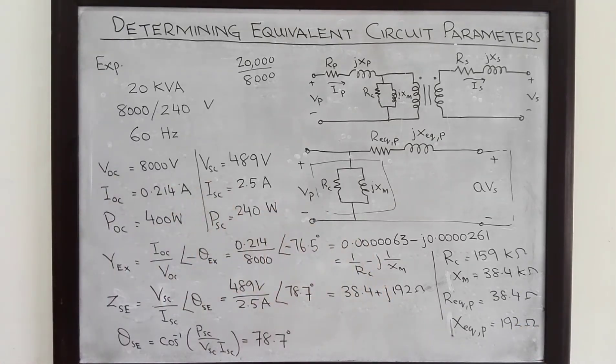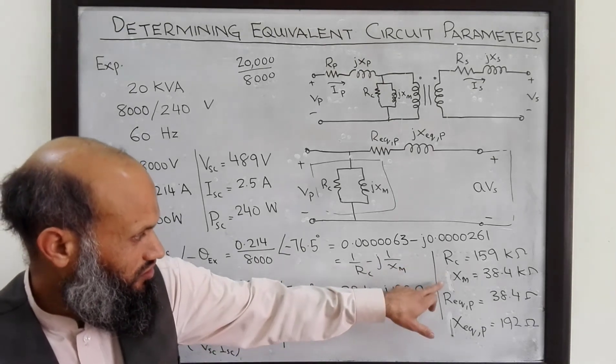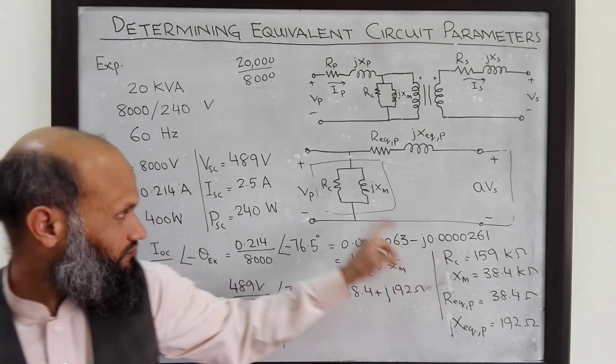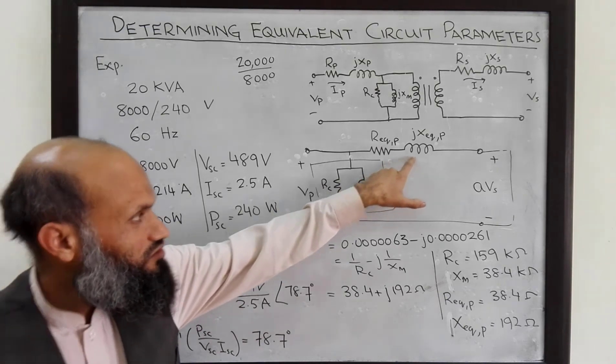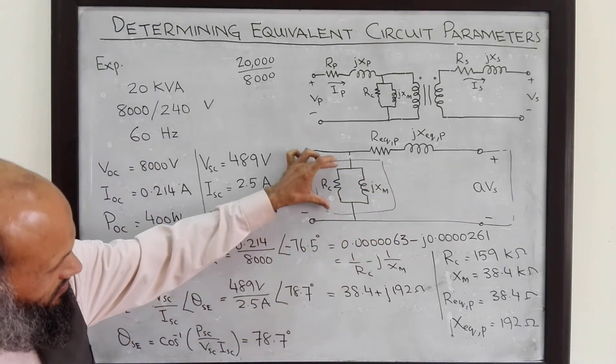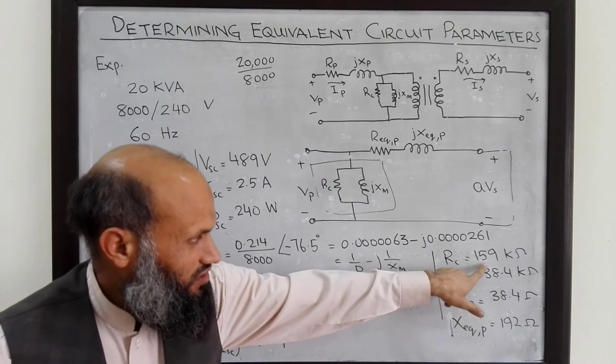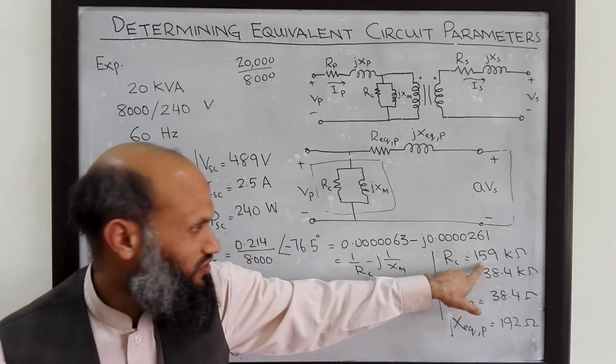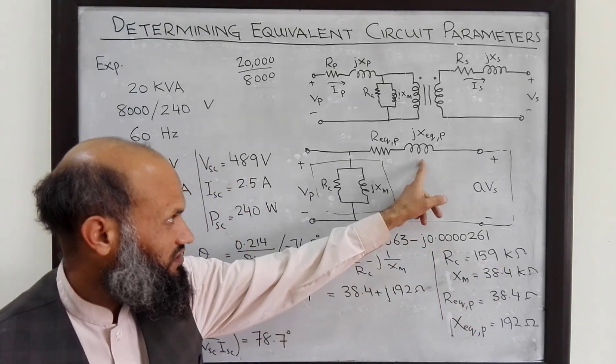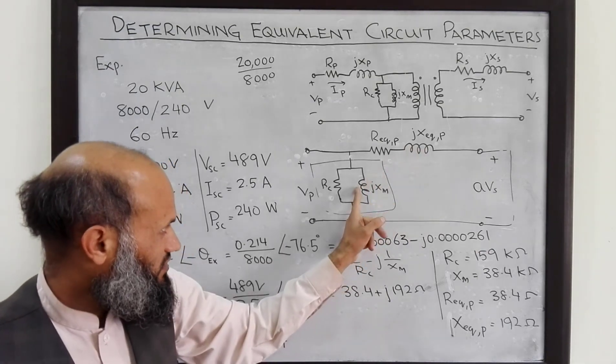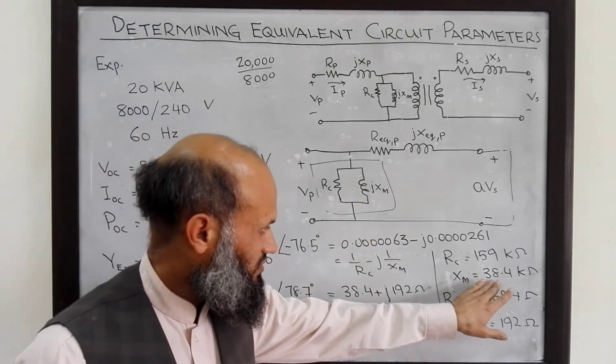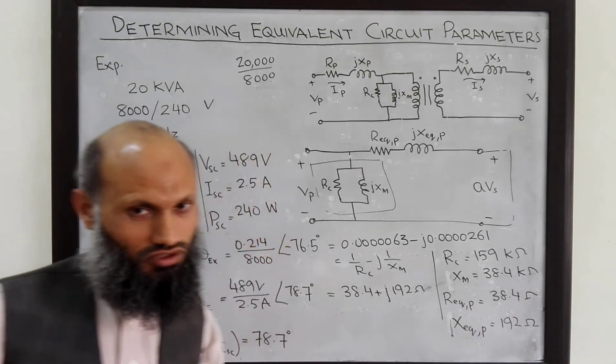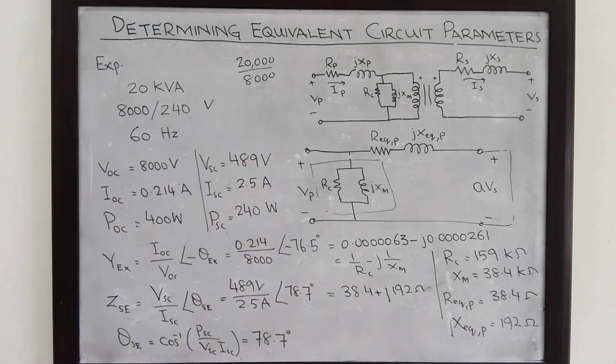This example also gives you some intuitive values for the excitation branch impedances and series branch impedances. You can see that this resistance is generally very high compared to this resistance. This is 38 ohms and this is 159 kilo ohm. Similarly, this inductive reactance is generally small and this one is very large. So this is 38.4 kilo ohms whereas this is only 192 ohms. So this is how we determine the equivalent circuit parameters for the transformer.